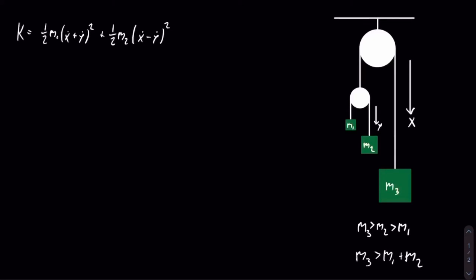For m3, it will be moving down at velocity x-dot, so the kinetic energy is straightforward. The kinetic energy for m3 is equal to one-half m3 x-dot squared. And that is the total kinetic energy.